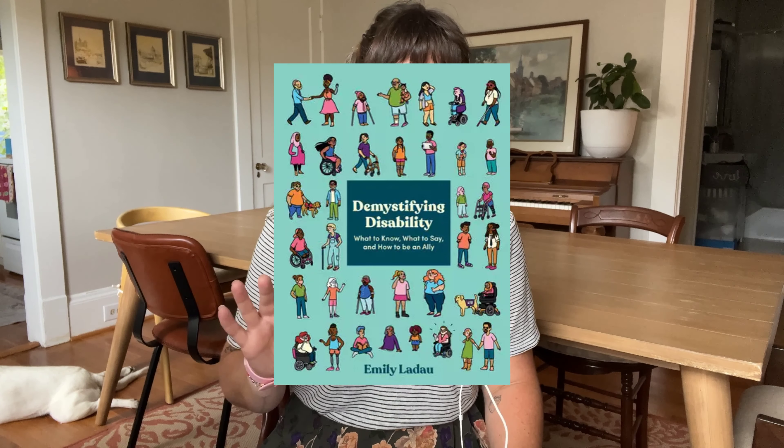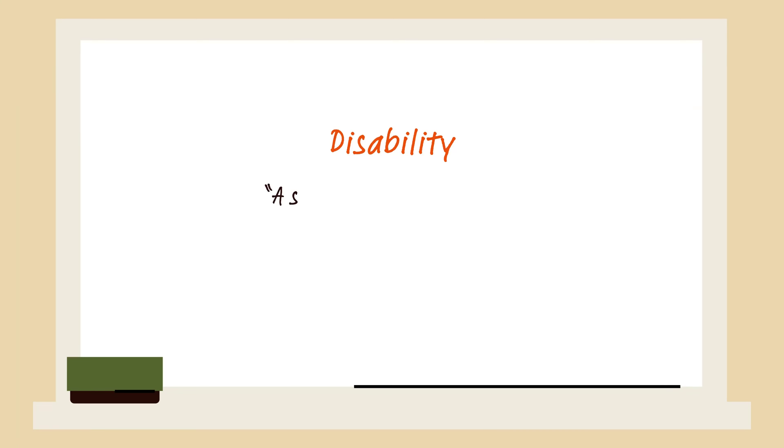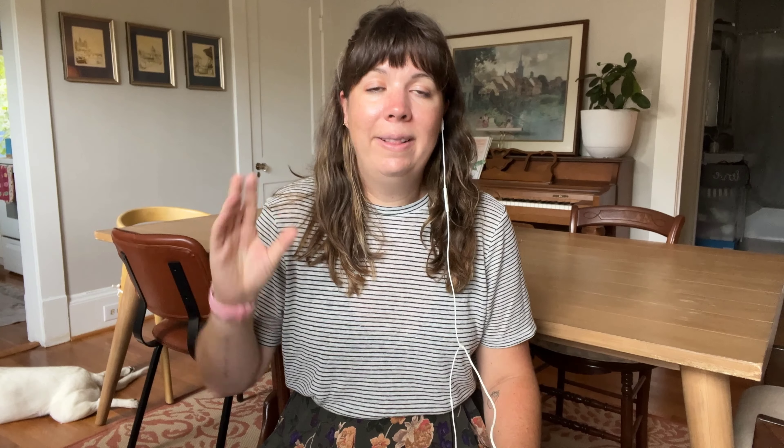Disability — that's where we're going to start. There are lots of different definitions available. If you Google it or ask people for their definition, you're going to get a variety of responses. The definition that I use and that we use at my business, Chez Jeunesse, comes from a book called Demystifying Disability. The author, Emily Ladeau, is disabled, and the definition she uses is: a state of being, a natural part of the human experience. I love that definition because it envelops disability into our human experience instead of separating it from it, which oftentimes happens through bias in our culture. There's no positivity or negativity attached to disability — it just is what it is.